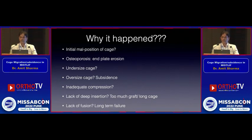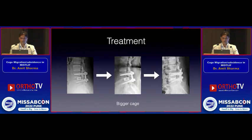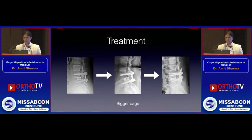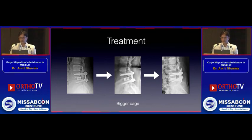Literature says most of these back-out cases occur around three months, and the main contributing factor is lack of union at the operated level. The most common treatment is: remove the backed-out cage, insert a bigger cage, add more bone graft, and decompress.